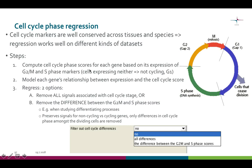For this purpose, the tool first computes cell cycle phase scores for each cell based on its expression of G2/M and S phase markers. Cells expressing neither are likely not cycling and are thus in G1 phase. Then, for each gene, the relationship between the gene expression and the cell cycle score is modeled.